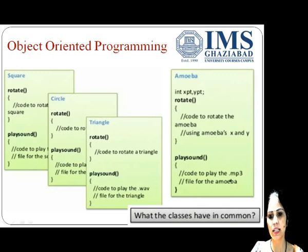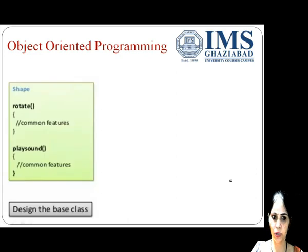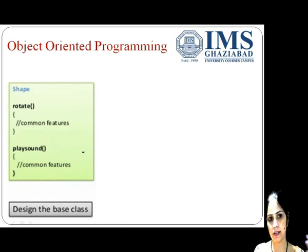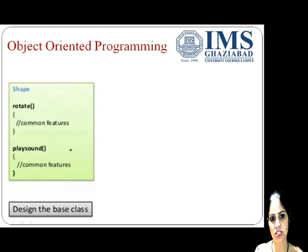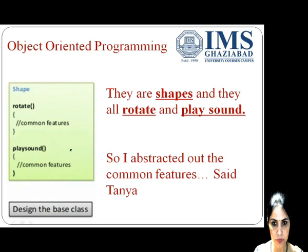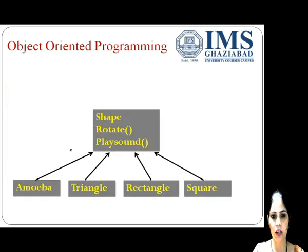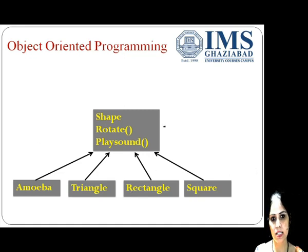What do the classes have in common? Rotate and play sound. So, design a base class first — let the name of the class be Shape. In this base class, we add the common features: the rotate and play sound functions with the common implementation used by square, circle, and triangle. Then four derived classes are declared — Amoeba, Triangle, Rectangle, and Square — and all these classes would be inheriting the features of the class Shape.